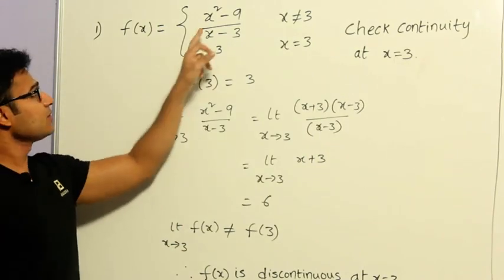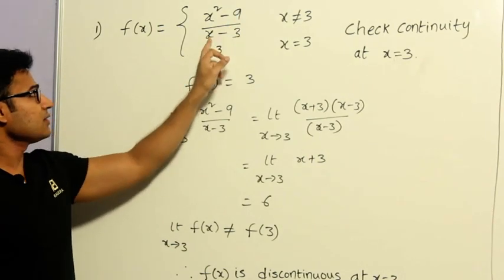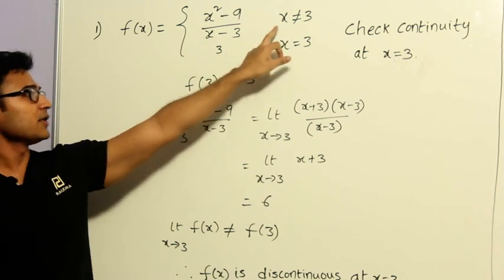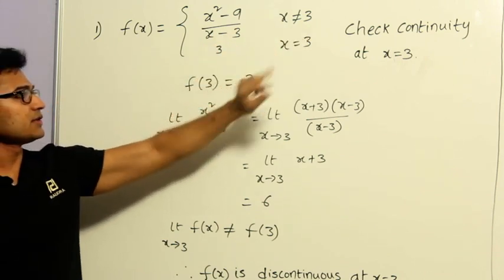Now, let's see this question. F of x equals x squared minus 9 divided by x minus 3 when x is not equal to 3, and it is equal to 3 when x equals 3.